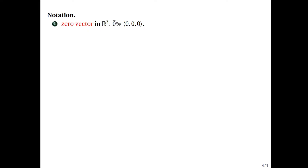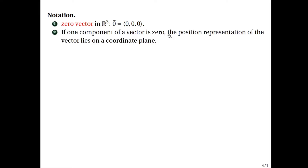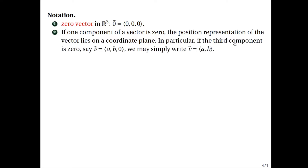We denote the zero vector as 0 with an arrow above it. The zero vector is the vector with all the components equal to 0. If one component of a vector is 0, then the position representation of that vector lies in the coordinate plane. For example, if we have the vector V with components A, B, 0, since the Z component is 0, this vector will lie on the xy-plane. Hence, we may simply write the vector V as A, B. We have to take note that this shortened form will only hold if the third component is 0 — if the second component is 0, you cannot drop the second component.